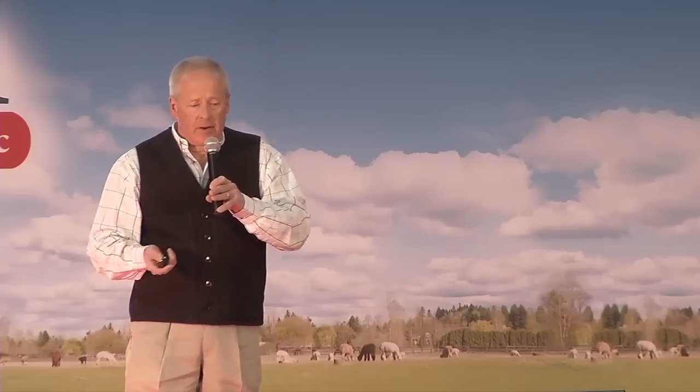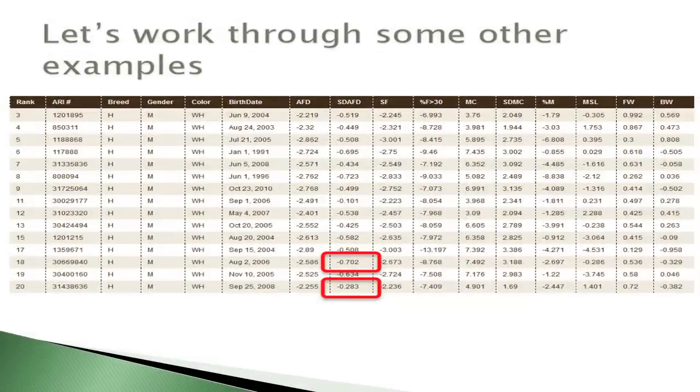Looking at standard deviation of fiber diameter: the bottom animal has a minus 2.83 and the one above it has a .702, so roughly a 0.42 difference — about half a standard deviation difference in fiber diameter. Standard deviation doesn't have units like fleece weight does in pounds. But again, it's the differences that count.